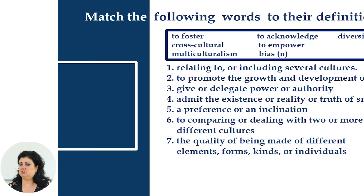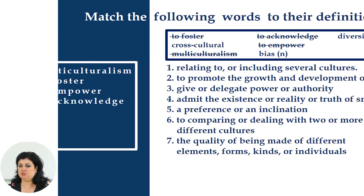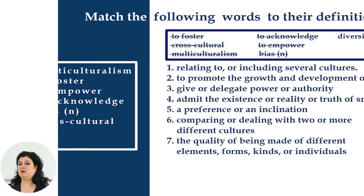Let's match them with their definitions. Number one: relating to or including several cultures – it's multiculturalism. Number two: to promote the growth and development of – it's to foster. Number three: to give or delegate power or authority – it's to empower. Number four: to admit the existence or reality or truth of something – it's to acknowledge. Number five: a preference or an inclination – it's bias. Number six: comparing or dealing with two or more different cultures – cross-cultural. Number seven: the quality of being made of different elements, forms, kinds, or individuals – this is diversity.